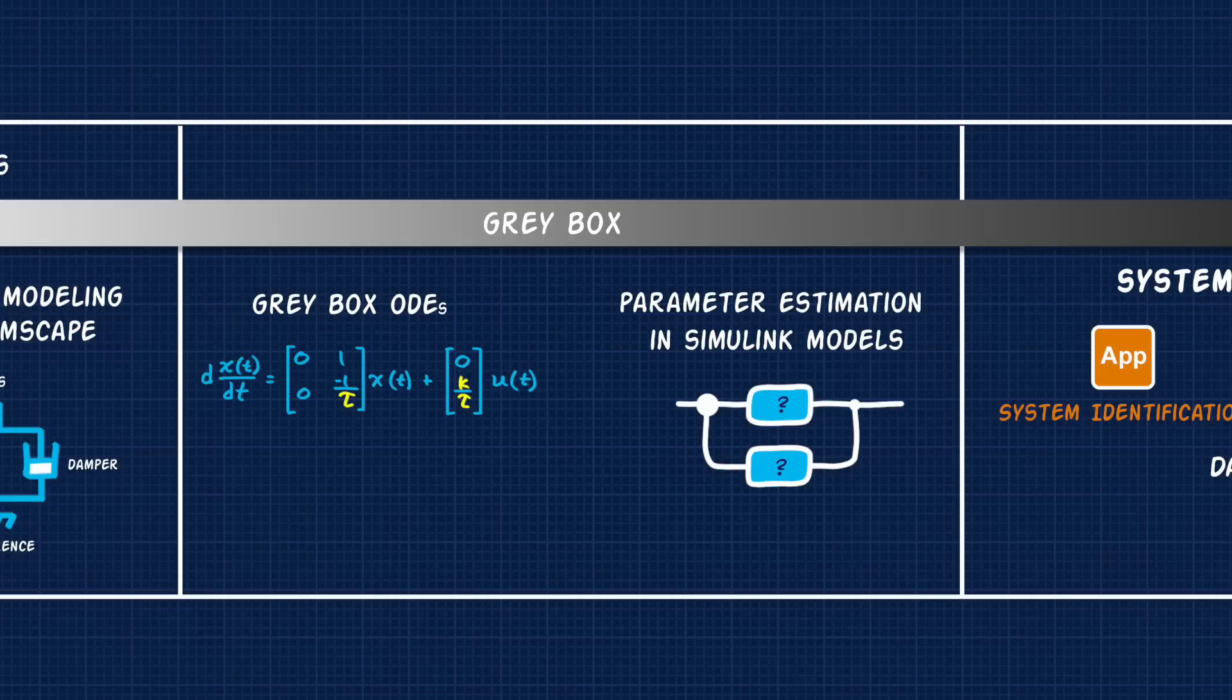Using data to estimate parameters is not just limited to MATLAB models, but can also be done with Simulink models. In this way, you can build a model based on what you know, and then learn the rest using data from the system. And there's the parameter estimator app, which can help with this type of gray box modeling.